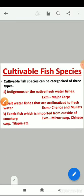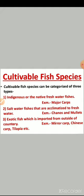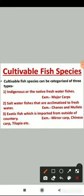Cultivable fish species can be categorized into three types. Indigenous or native freshwater fishes — for example, major carps. Saltwater fishes that are acclimatized to freshwater, like Channas and mullets. Exotic fishes which are imported from outside countries — for example, minor carps, Chinese carp, and Tilapia.